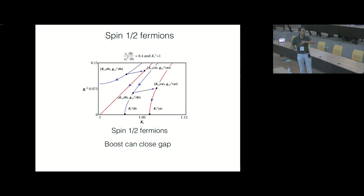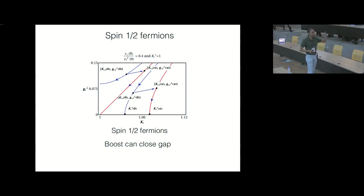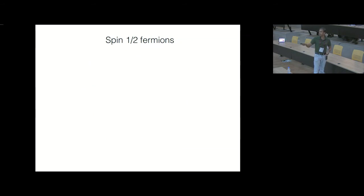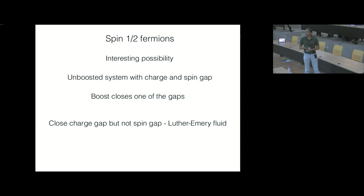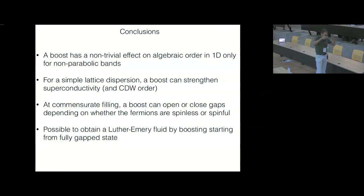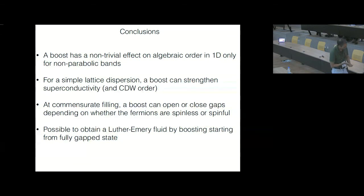For spin-half fermions, the opposite effect happens — the boost can actually close a gap rather than open one — and this has to do with the scaling dimension of the bosonic field in the two cases. This gives an interesting possibility to create something called a Luther-Emery fluid. So my conclusions are: a boost can have a non-trivial effect on algebraic order in 1D for non-parabolic bands; for the simplest kind of dispersion on a lattice it can strengthen superconductivity; and it can open or close gaps if umklapp is operative. Thank you very much.